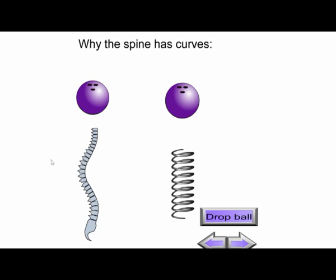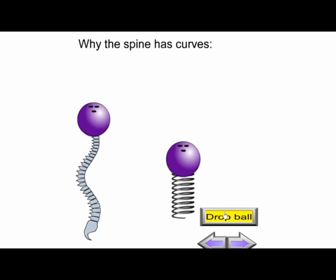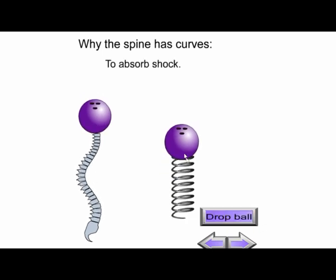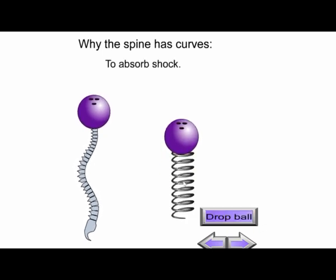Hello everyone, this is Dr. Terry from SpineCare. Today I want to talk to you about the structure and the curve in your neck. Normally in our spine, we have a C-shaped curve in the neck and also in the lower back. The reason we have a curve is because our spine is designed like a spring — it is to absorb shock.